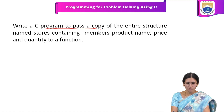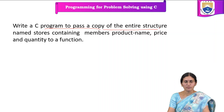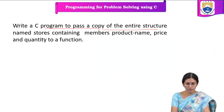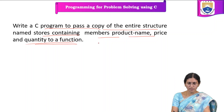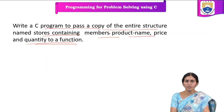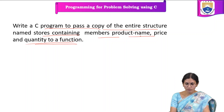The first program is to write a C program to pass a copy of the entire structure named stores, containing members: product name, price, and quantity, to a function. Here, what we need to do is pass a copy of the entire structure named stores.